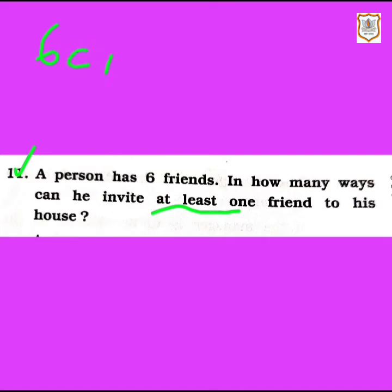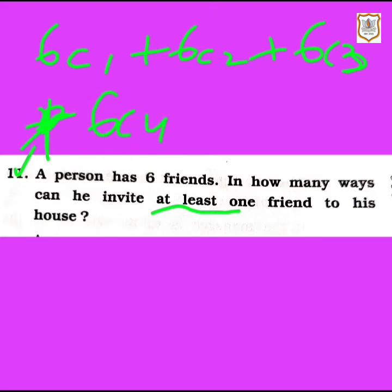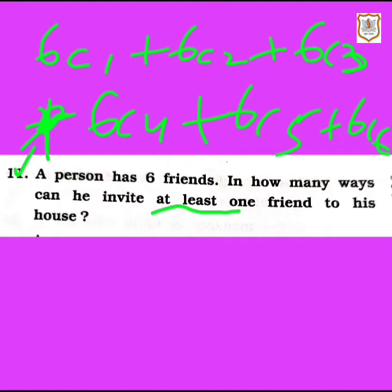So the combination can be: if he invites one friend it will be 6C1, or if he invites two friends it will be 6C2, or three friends it will be 6C3, or four friends 6C4, or 6C5, or 6C6. So this can be the total combination of inviting at least one friend to his house. Let's solve this combination and be more clear.